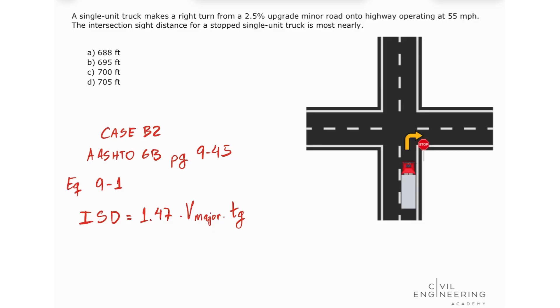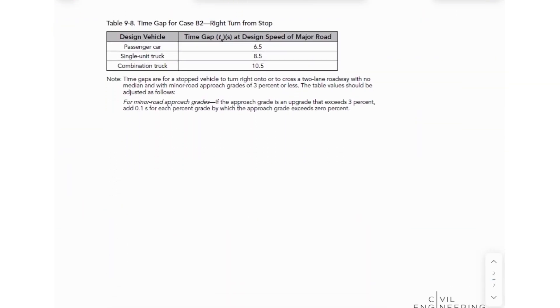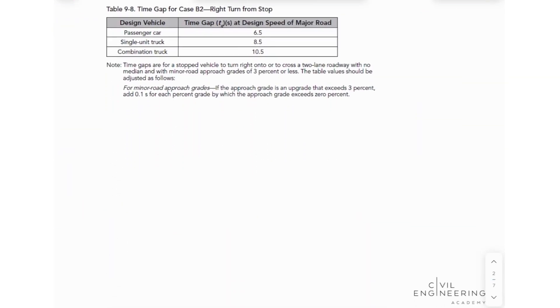And let's take a look in our table here. So this is table 9.8 for time gap for case B, right turn from stop. And we need to identify the type of vehicle that we have. In this case we got one single unit truck. So our time gap is equal 8.5.